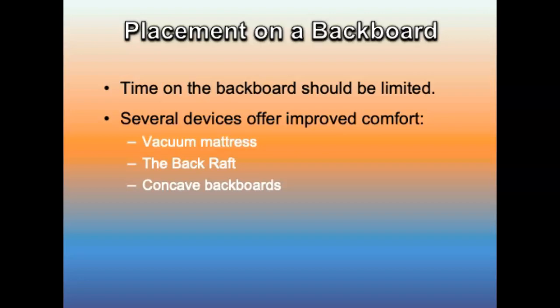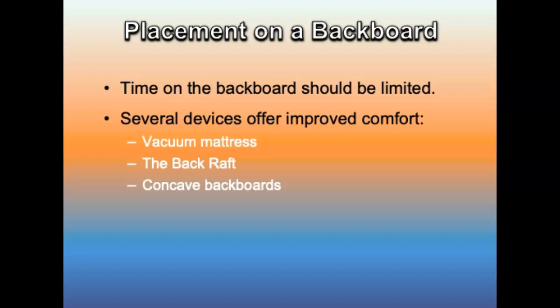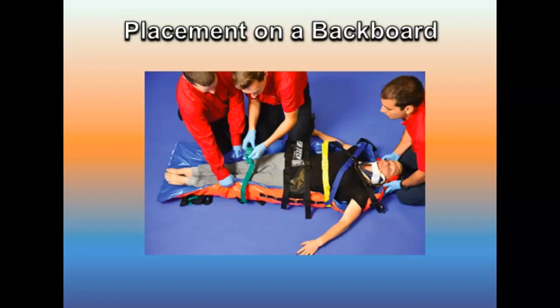Skin breakdown can be a complication of full spinal immobilization due to excessive pressure over bony prominences such as the buttocks, scapular ridges, or base of the occiput. Several devices have been developed to improve patient comfort, including vacuum mattresses, back rafts, and concave backboards. Back rafts take pressure off specific areas and fill voids with towel rolls and blankets. Concave backboards conform more closely to the patient's anatomy than flat backboards.